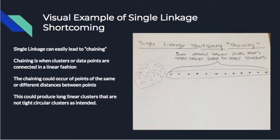Here is the shortcoming of single linkage. It can lead to chaining — if you have a ton of points linearly or close to linear that have the same distance between them, and you increase the distance sigma as seen in the proof, they would all chain together at the same iteration when running the algorithm. It would recognize that long chain as a cluster, which you obviously don't want — or you might, depending on how you want your clusters to look. This is clearly a shortcoming of single linkage and might not be helpful.